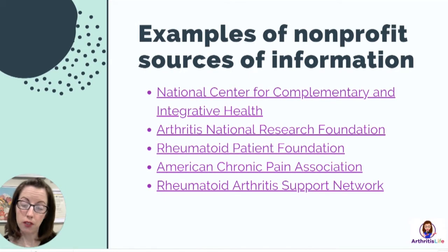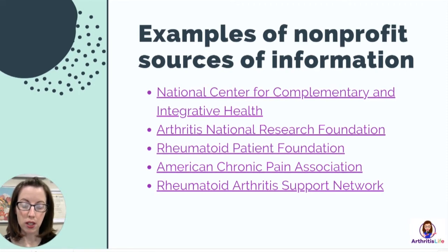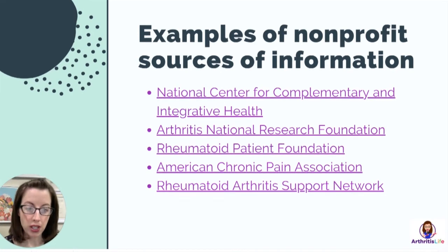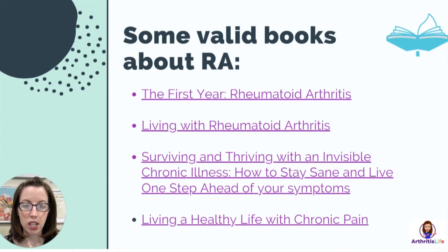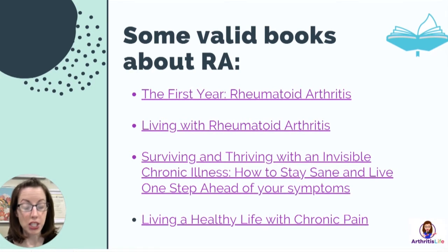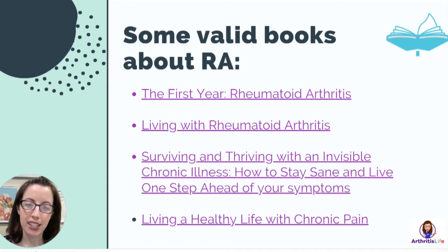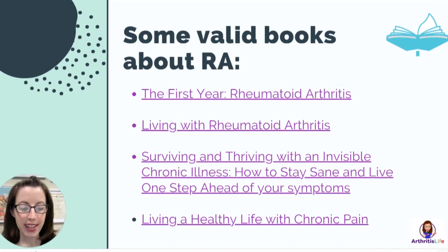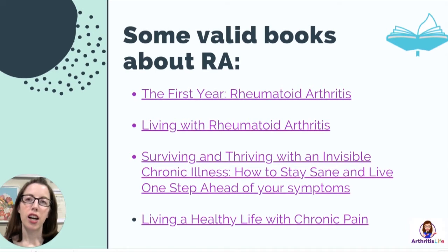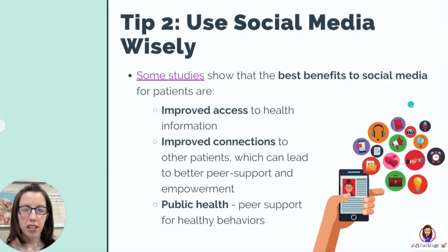If you're interested in complementary, alternative, or integrative health, you can check out valid sources in that area too. A few books I think are well-edited and well-verified are: 'The First Year: Rheumatoid Arthritis,' 'Living with Rheumatoid Arthritis,' and 'Surviving and Thriving with an Invisible Chronic Illness' — the author is down-to-earth and entertaining as well as helpful. There's also 'Living a Healthy Life with Chronic Pain' from Stanford University's Center for Self-Management.